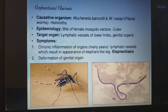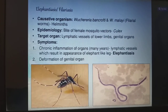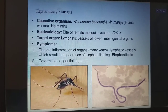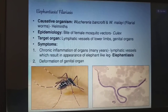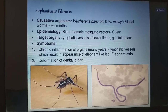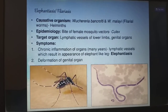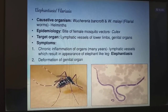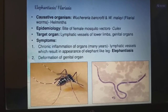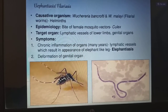Next, elephantiasis. The name itself is because of the elephant-like leg; they named it as elephantiasis or filariasis. Coming to the causative organism, Wuchereria bancrofti or Wuchereria malayi — the filarial worm, helminths.